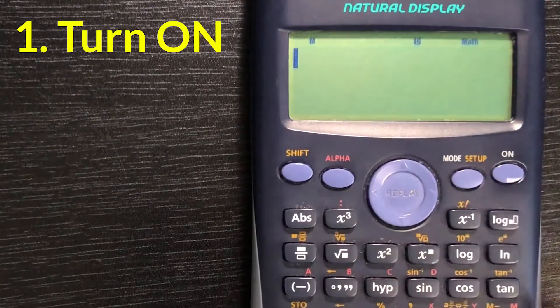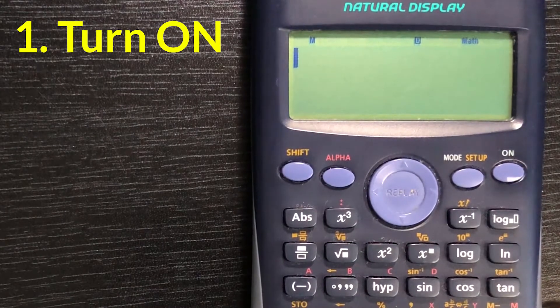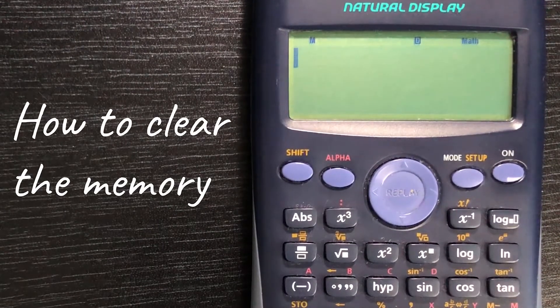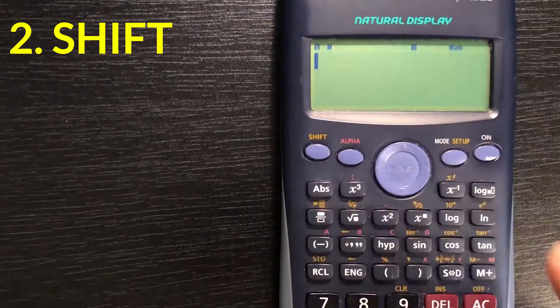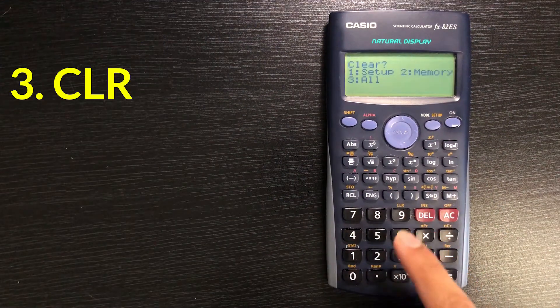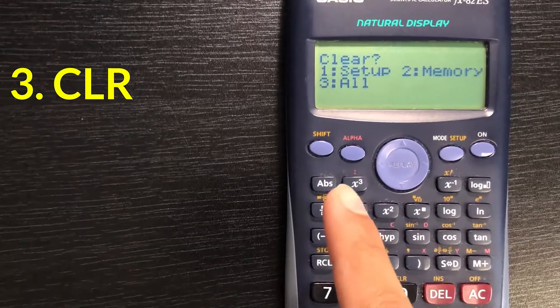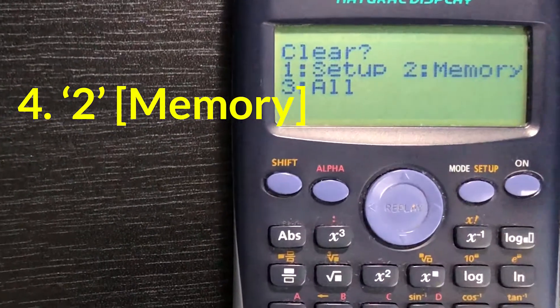So let's start by turning it on and the first thing I want to show you is how to clear your memory. Now when I talk about memory you'll see if I press shift and I press clear it'll ask me what I want to clear exactly and I'll choose option two.